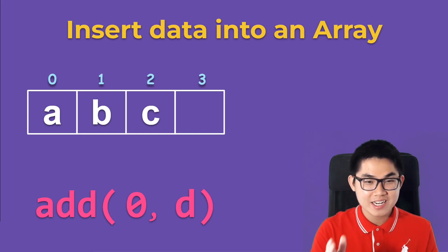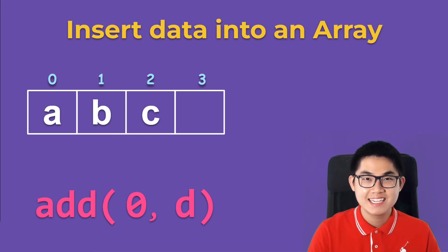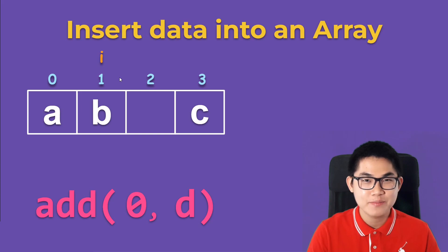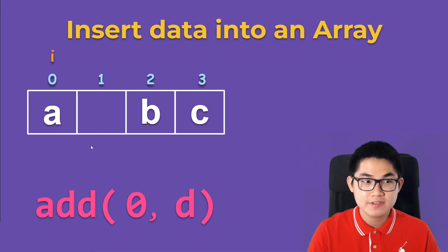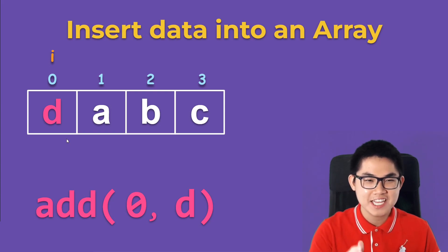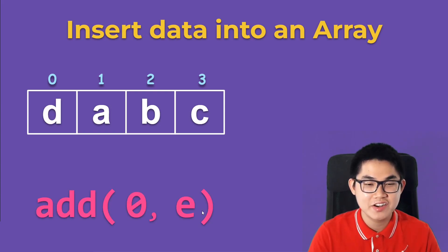Because three is less than four, we know there's still enough space. The second step is to put the iterator at the last letter, at index two. We move C to the right, move the iterator to the left, repeat — move B to the right, move A to the right. Now index zero is empty, so we put D into the array. Now we have D, A, B, C.